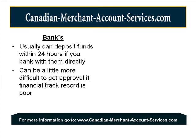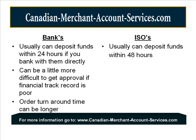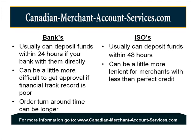Some cons are that bank accounts are a little bit more difficult to get approved if your financial track record is poor, and order turnaround time can take a little longer — sometimes seven business days up to two or three weeks. With ISO organizations, deposits usually take 48 hours. They're a little more lenient when you have less than perfect credit, and turnaround time is usually about five business days or less.